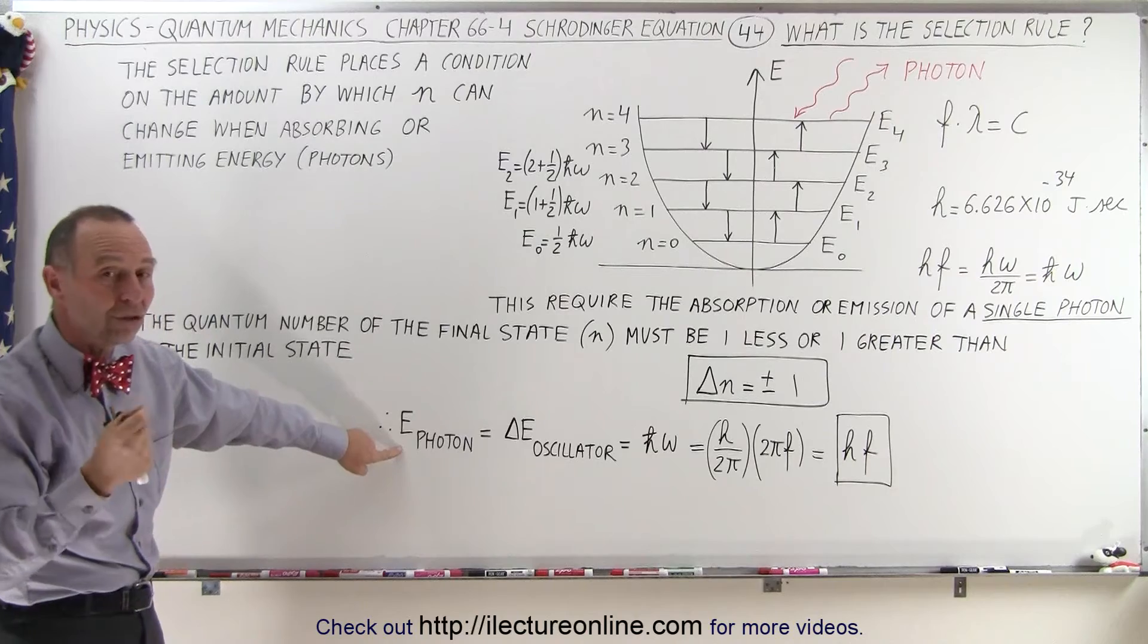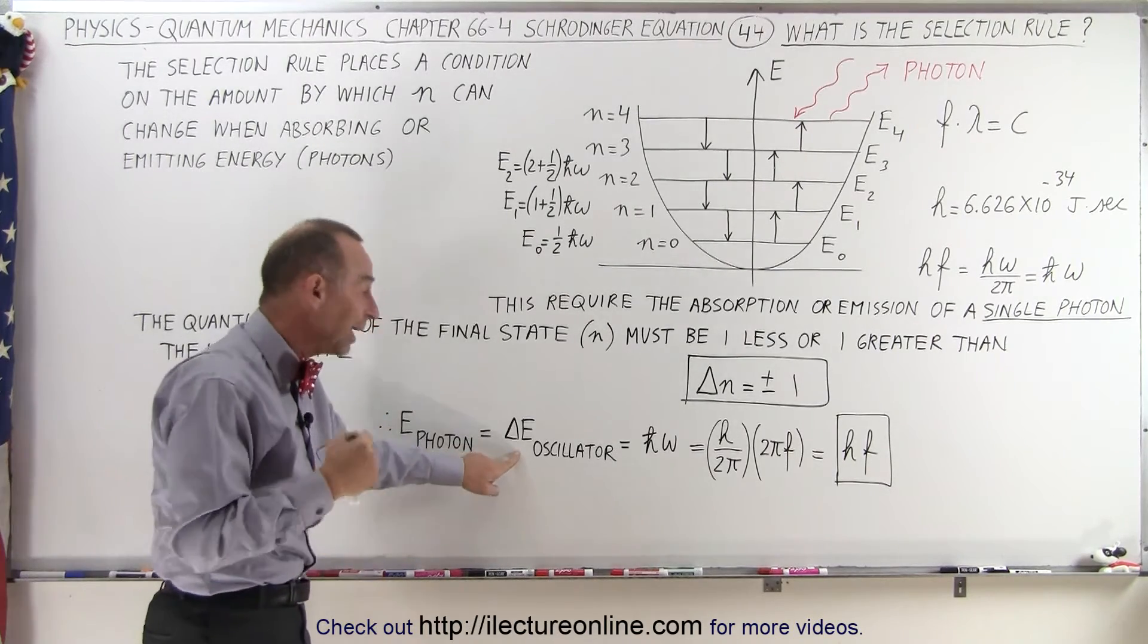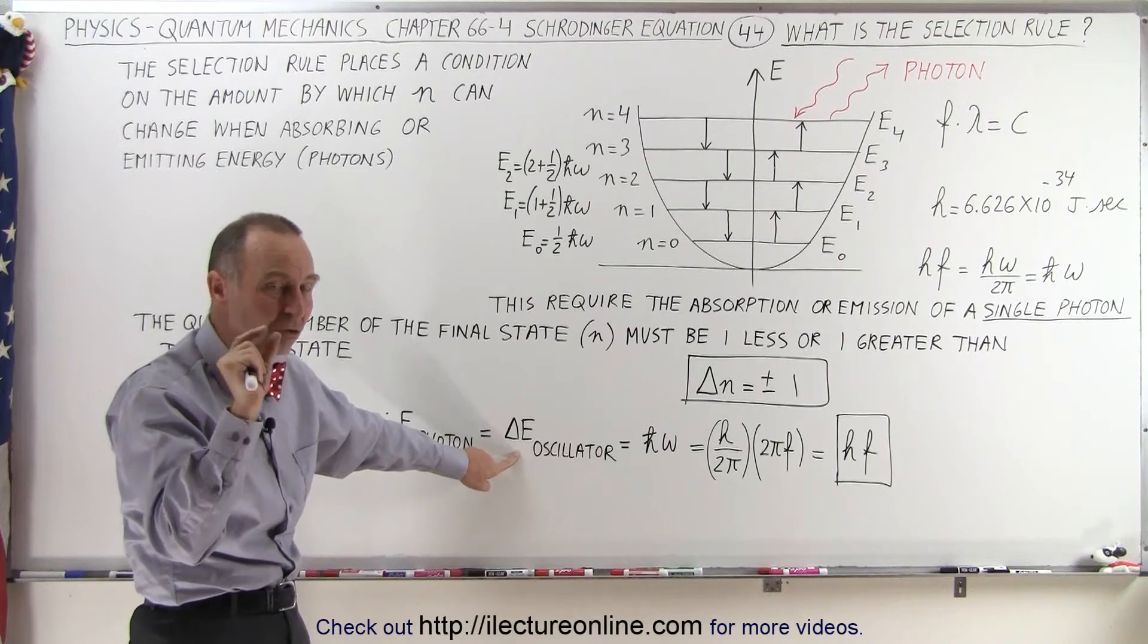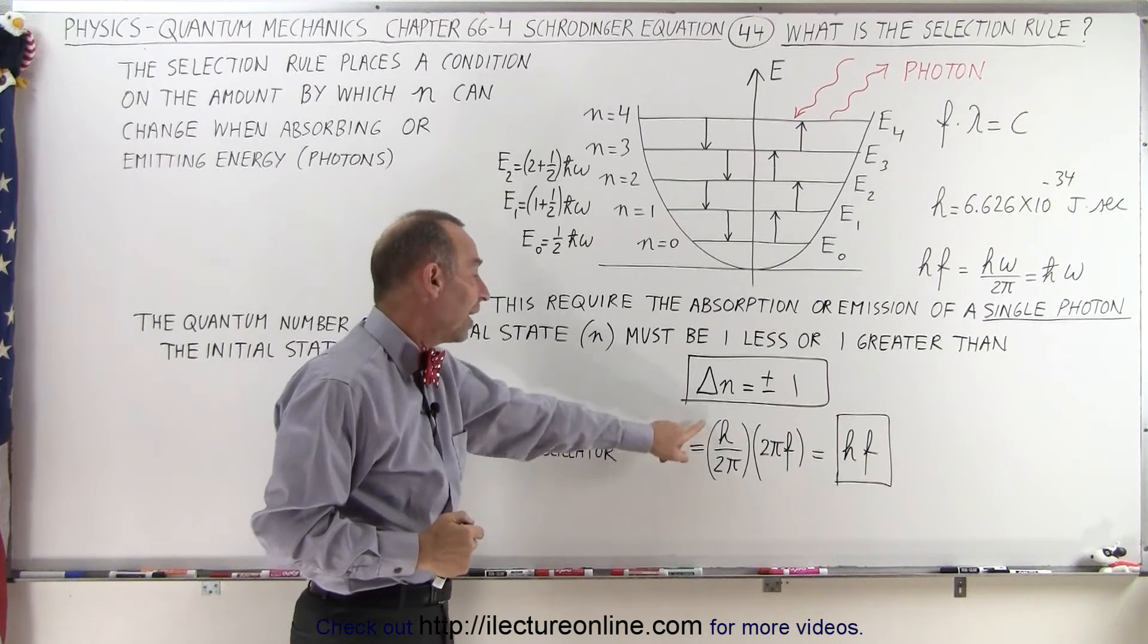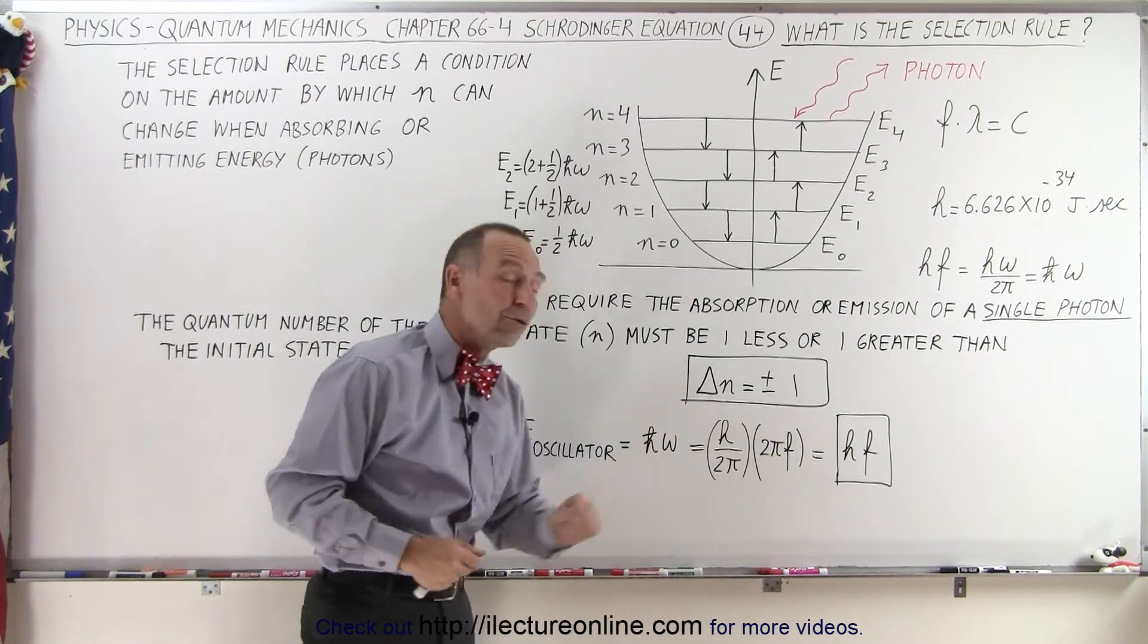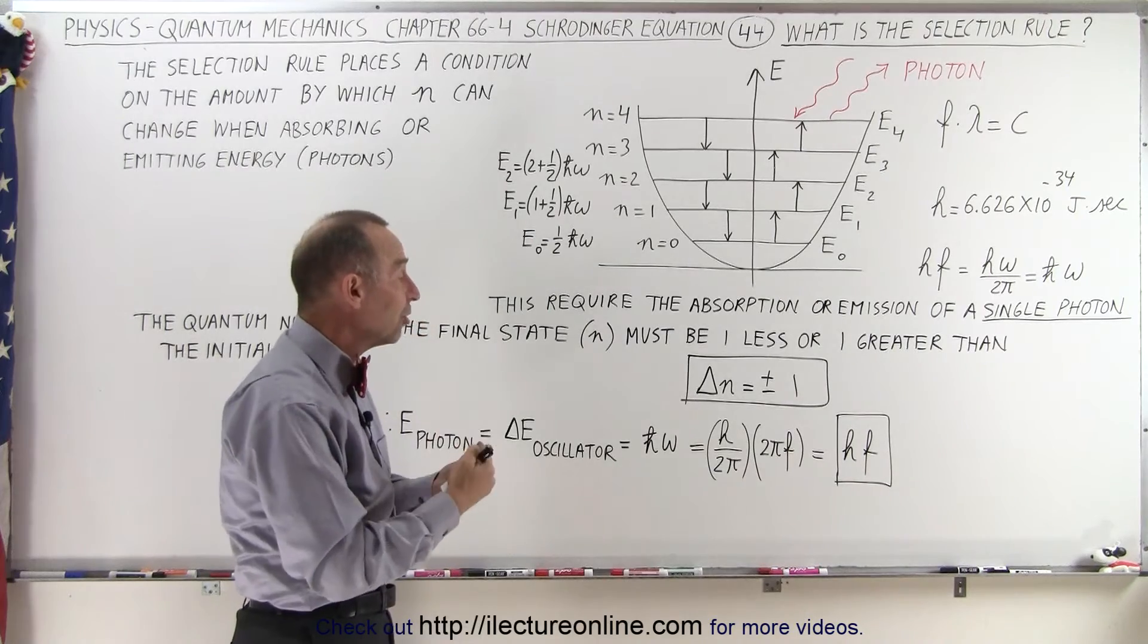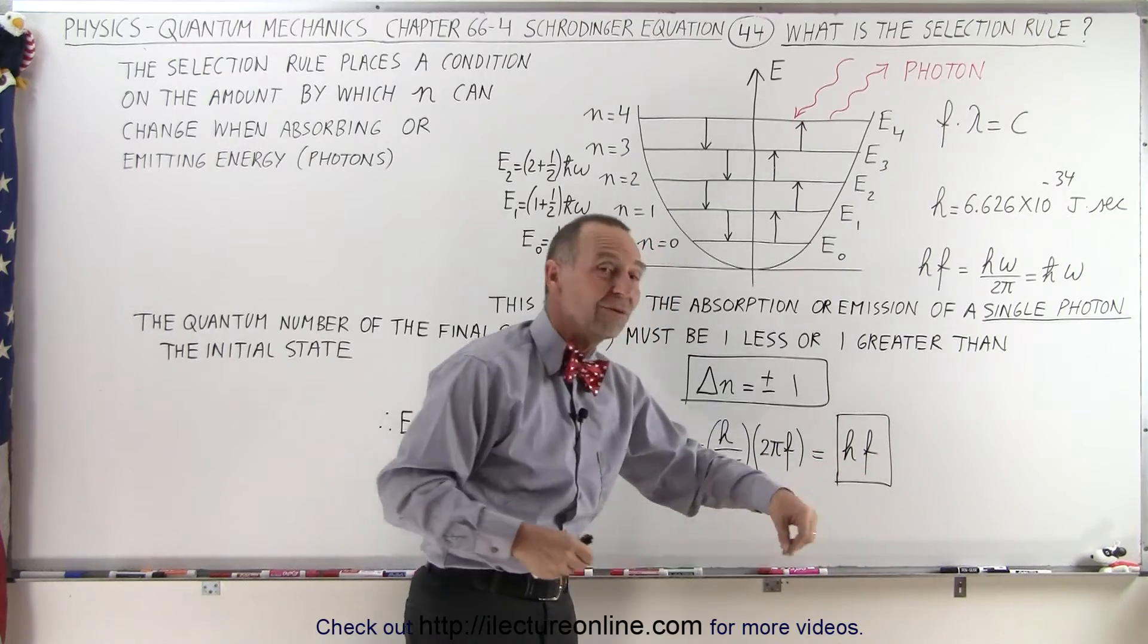Because of that, the energy of the photon that's either emitted or absorbed is equal to the delta energy of the oscillator between any two adjacent states, and that's equal to ℏω. Since ℏ is h over 2π, and ω equals 2πf, when the two π's cancel, the difference in energy, which therefore is equal to the energy of the photon, is equal to hf.